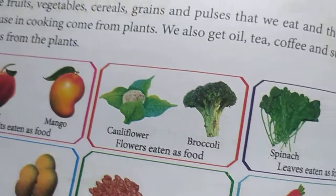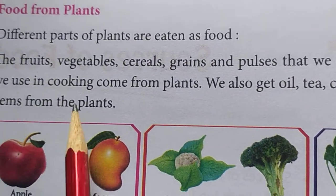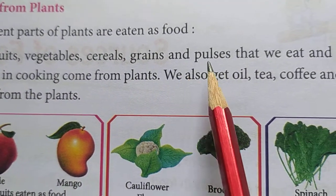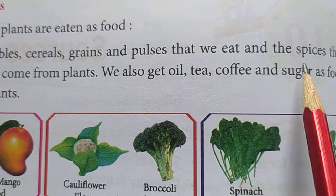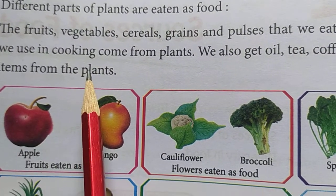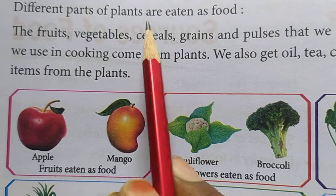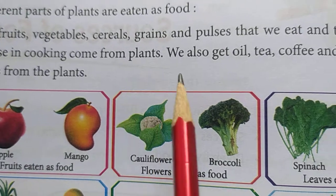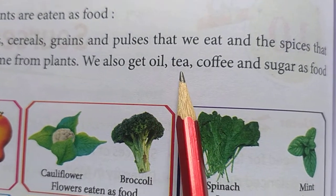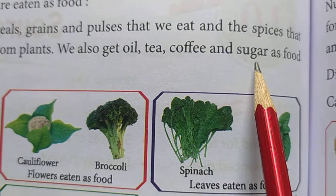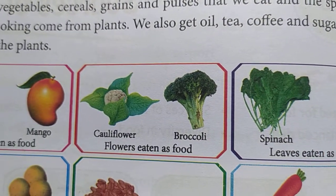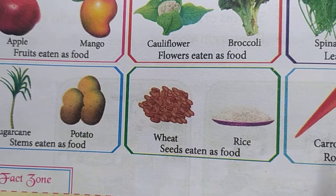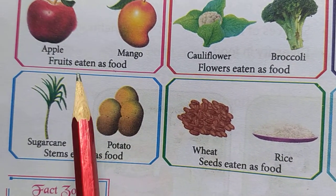From plants we get fruits, vegetables, cereals, grains, pulses, and also spices. We get all these from plants. Not only this, we also get oil, tea, coffee, and sugar from plants. So different parts of plants are eaten as food.